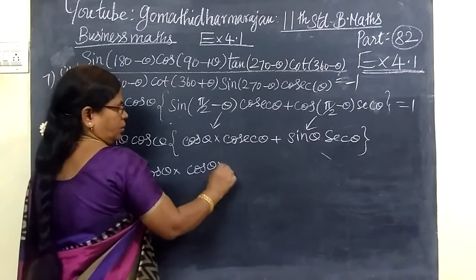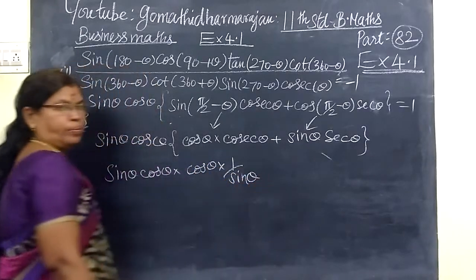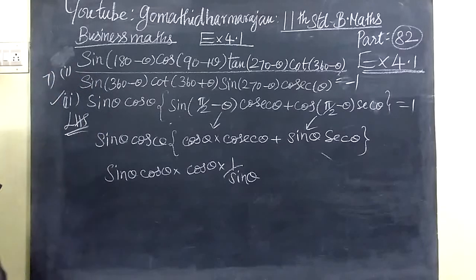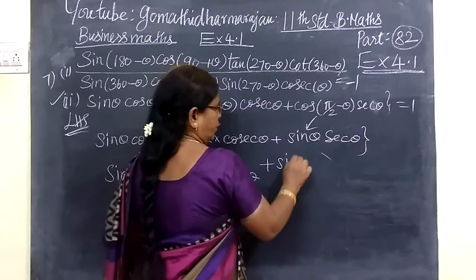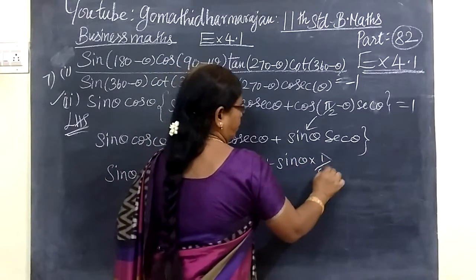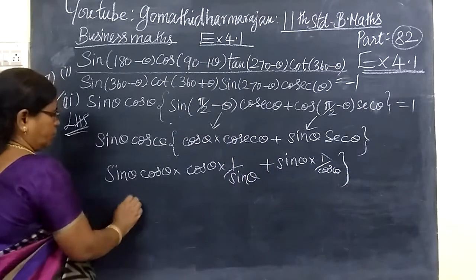You can write tan θ as sin θ over cos θ, then plus sec θ which is 1 over cos θ.